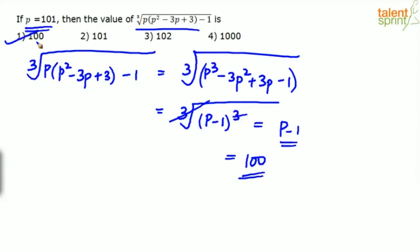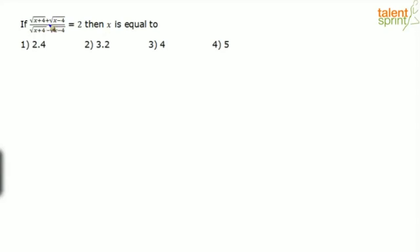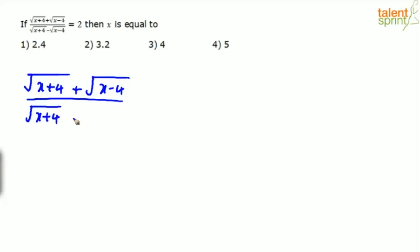Next question: (√(x+4) + √(x−4)) / (√(x+4) − √(x−4)) = 2. Find x. Options: 2.4, 3.2, 4, 5. This is one equation in one variable. A smart approach is to substitute the options back into the equation and check which one satisfies it.